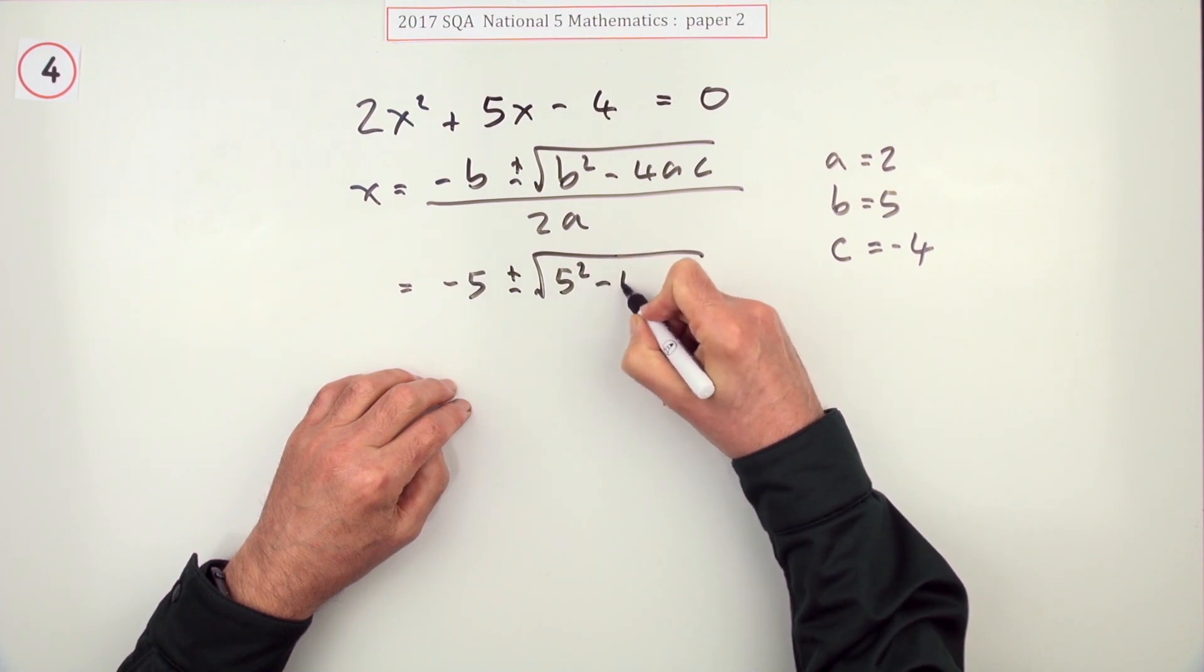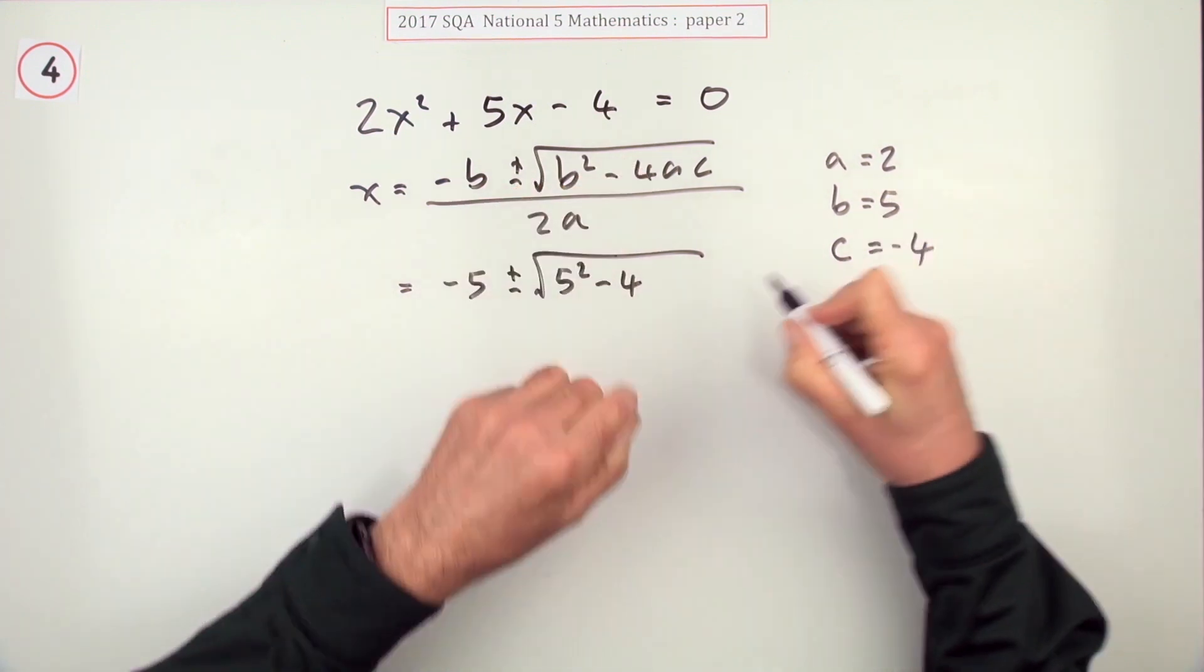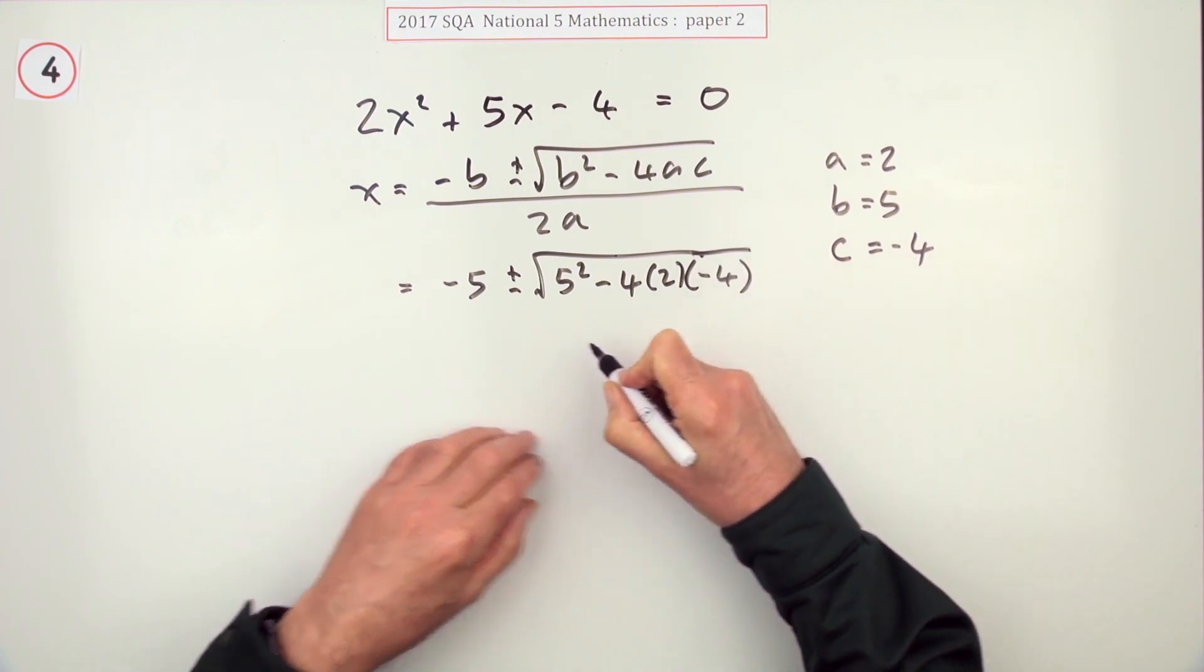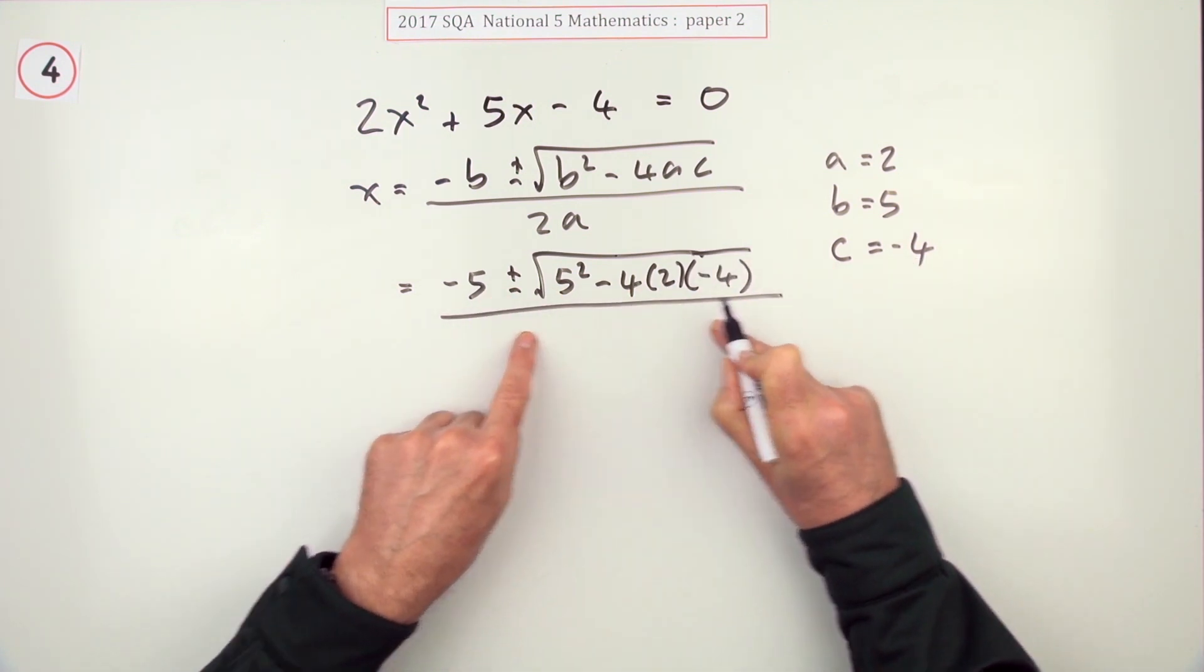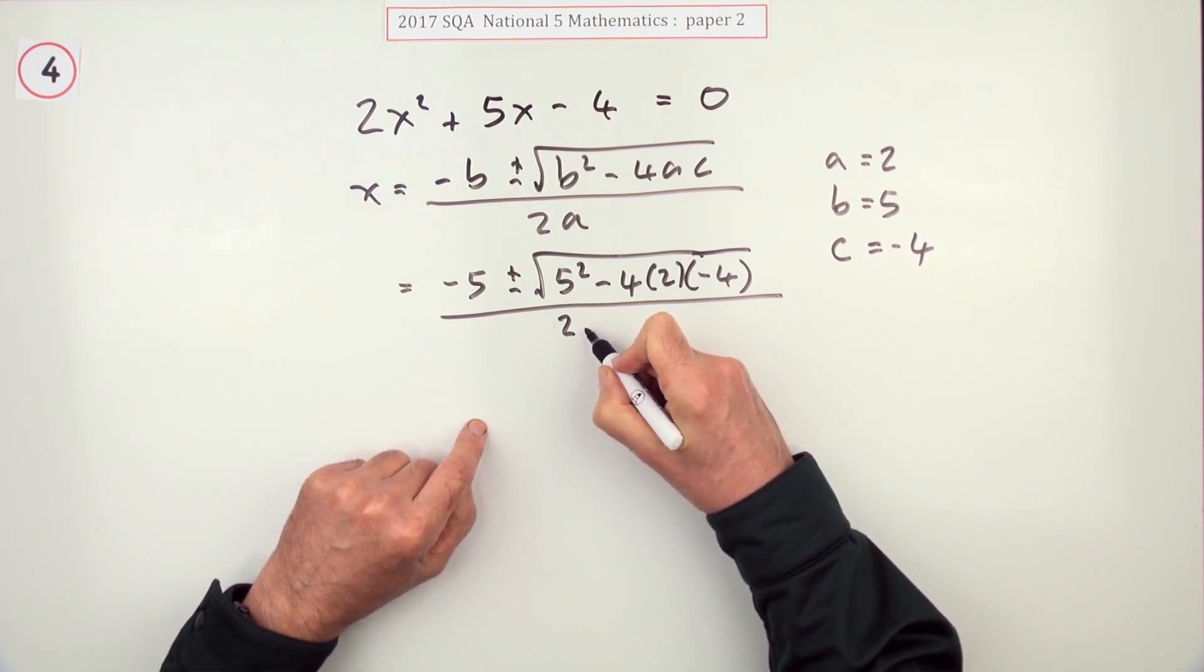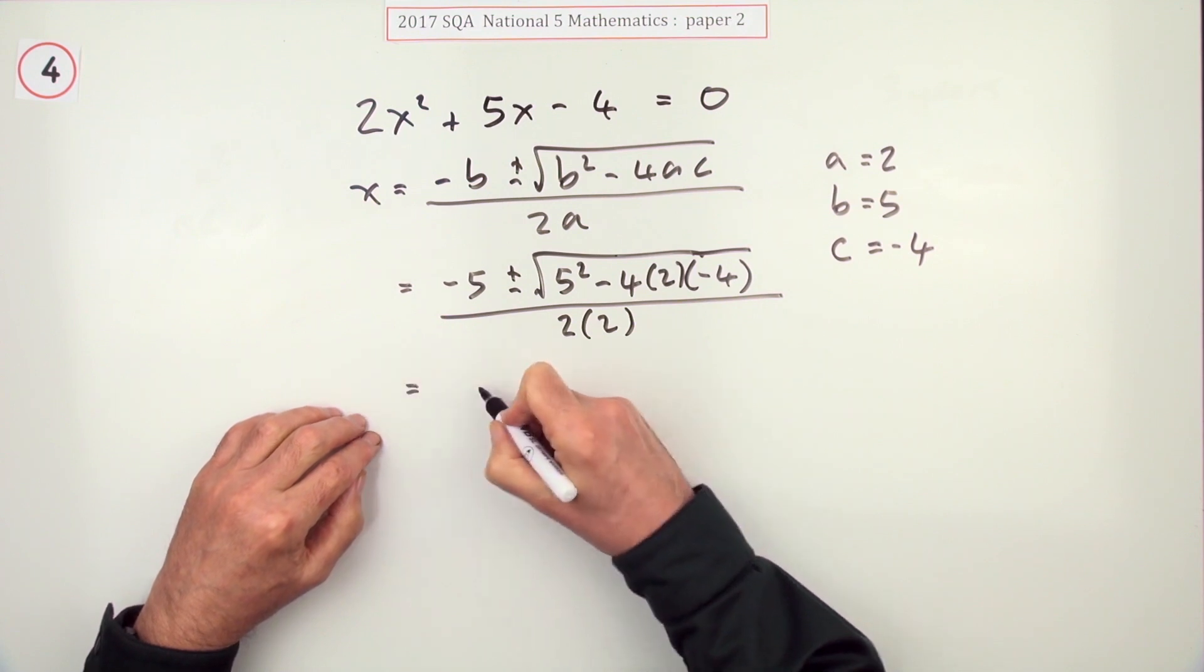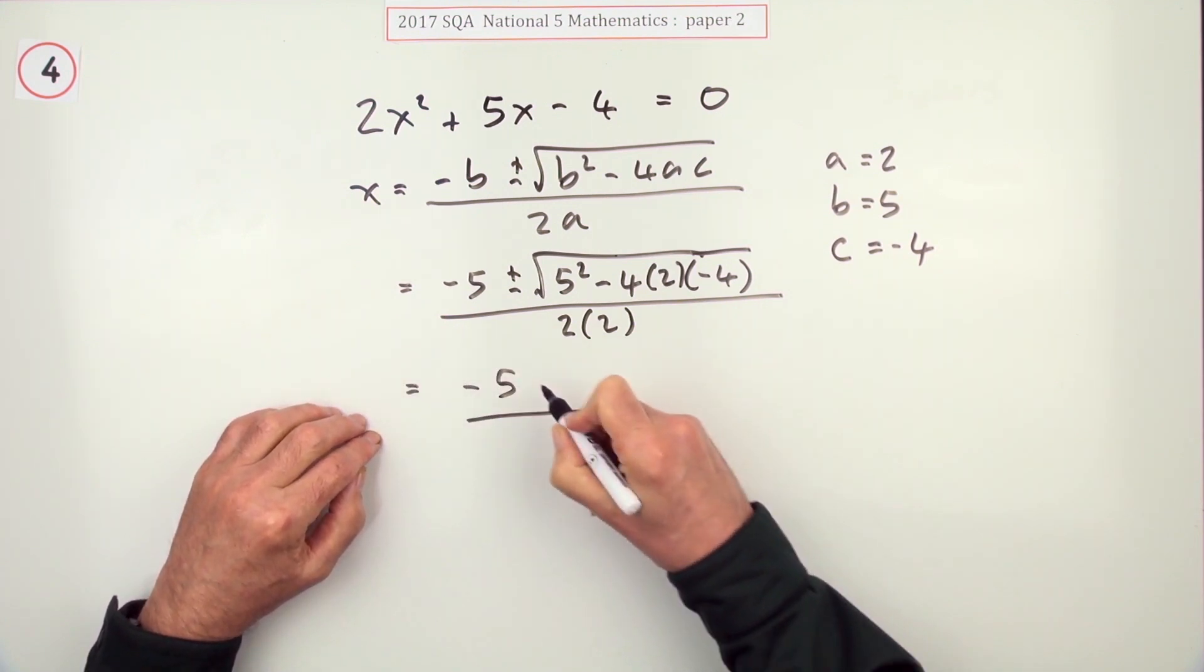That's 5 squared. Four times, now a is 2, I'll put it in this way, and c is -4. Make sure this line goes under the whole thing, doesn't just stop here. Over 2 times, and a is 2. I'll put that in that way as well.